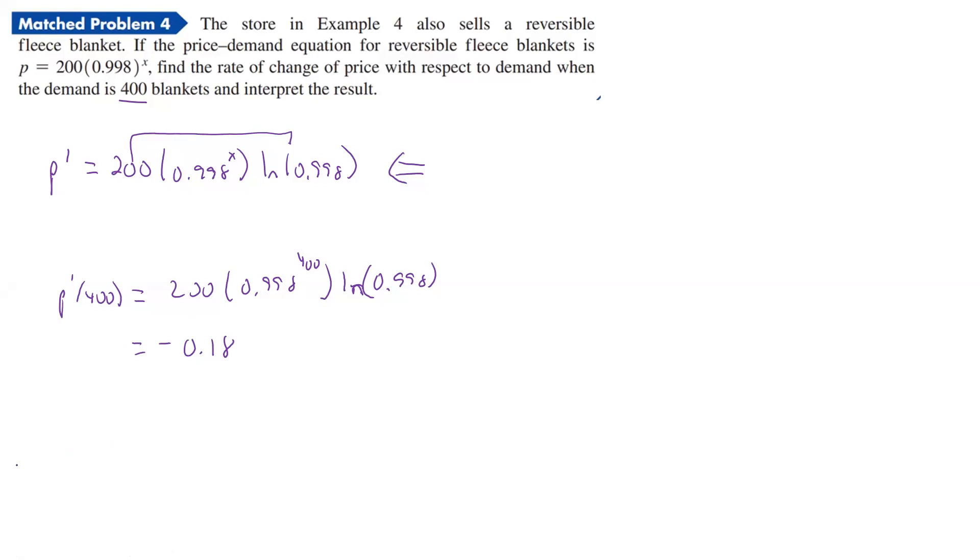All right, well, at 400 blankets, the price is what? Well, it's going down, decreasing, at the rate of. Now, this is going to be in dollars. If I remember what the problem was, it's dollars, which is 0.18 per blanket. And so that would be what they're doing. When you have this, it's 400 blankets, the price is decreasing at the rate of 0.18 dollars per blanket. All right, so let's stop there and we'll come back for more.